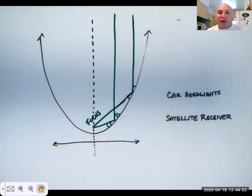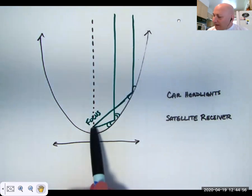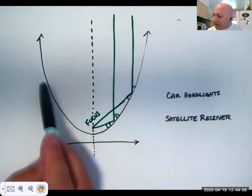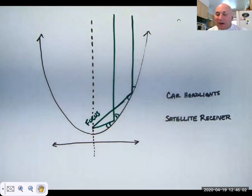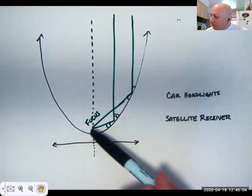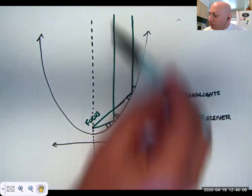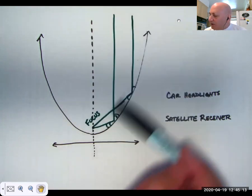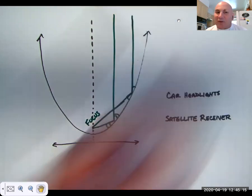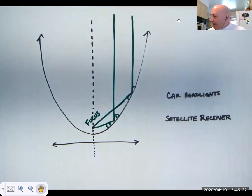Working in reverse, that's how your car headlights work. The bulb goes right at the focus, and the back of your car headlight is shaped somewhat like a parabola. So if the light from the bulb is going in all directions, it can go here and bounce out and go straight ahead. Those are just two practical applications of the use of a parabola.